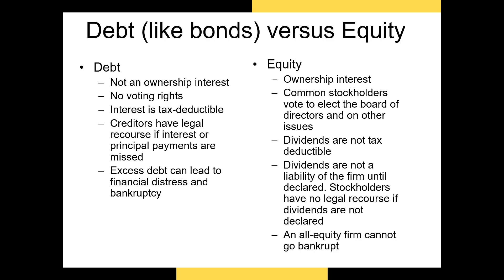Unlike bonds, ownership of stocks does not entitle a shareholder to dividends every period — some firms choose not to pay any regular dividends. This means that firms that have raised capital entirely through stock issuances are more financially flexible than firms that issue a lot of debt. You might wonder why a firm would issue bonds rather than stock. One of the most important reasons is because firms can deduct interest expenses paid to their bondholders from their taxable income, reducing the firm's tax liability.